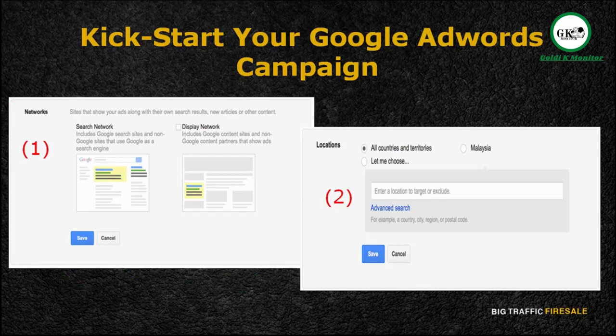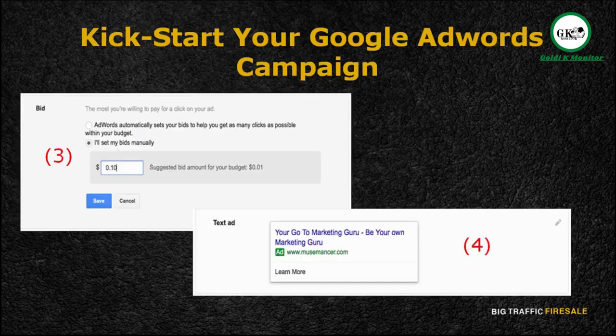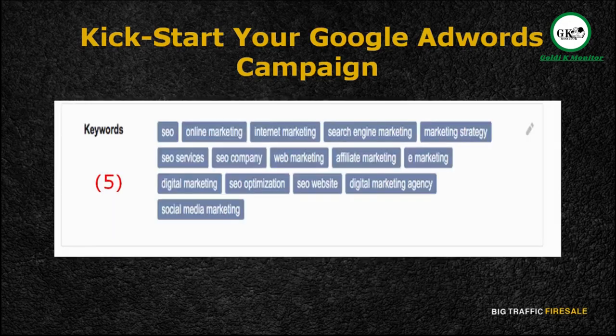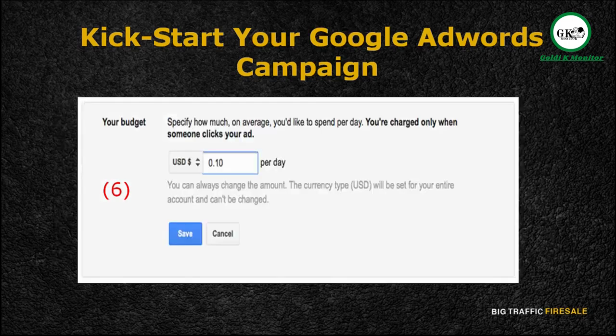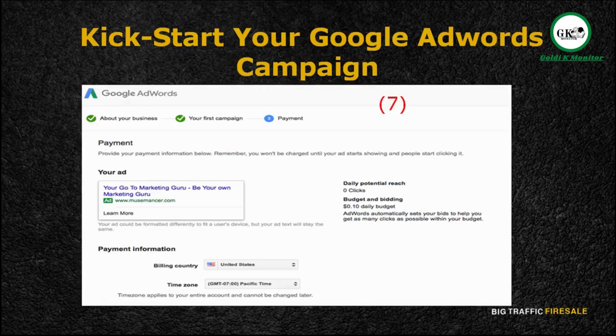For the first step, I recommend choosing the search network only as your campaign type for starters. Secondly, decide how large or small a geographic area you want to target. Thirdly, change the default bid strategy to 'I'll manually set my bids for clicks' so you can easily work within your budget. When you write your first ad, ensure your keywords are also inserted in the headline. The fifth step is to paste your keywords — start with just one set and add plus signs, brackets, and quotation marks to see how many search results you'll get. The sixth step is to set your maximum CPC within your budget. Finally, your ads will start showing up once you've confirmed your payment.